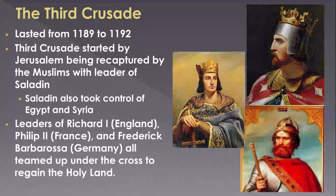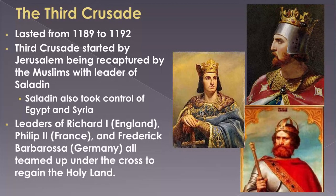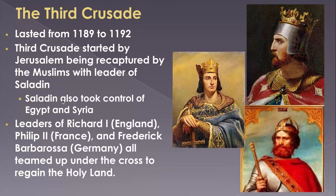That set up the Third Crusade — the need to come back and reclaim Jerusalem. Three countries answered the call: Richard the Lionheart of England, Frederick Barbarossa of Germany, and King Philip of France — all Christian leaders. On the other side was the Muslim general Saladin, one of the top military minds of the time, so these three were going to have their work cut out for them.